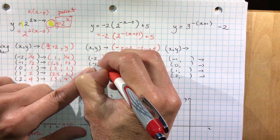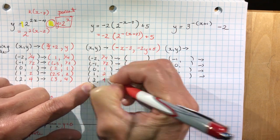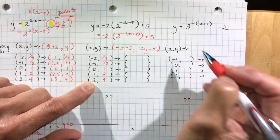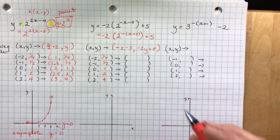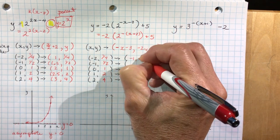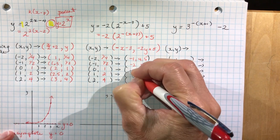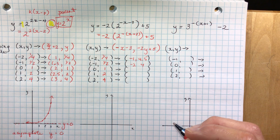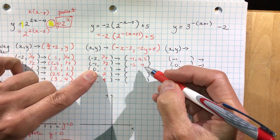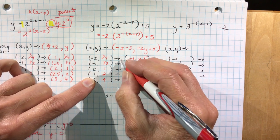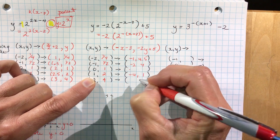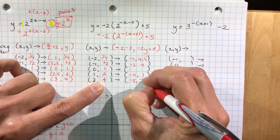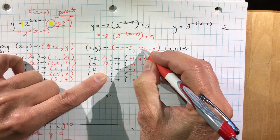I'm going to copy the beginning points from my other example because it's the same parent function y equals 2 to the x. Now I'll apply the transformation and give you the values. Plugging in: minus 2 gives minus 1 and 4 and a half; minus 1 gives minus 2 and 4; 0 gives minus 3 and 3; and 1 gives minus 4 and 1. Then minus 5: minus 4 times negative 1 is minus 4, times minus 2 is minus 8, plus 5 is minus 3. And minus 3 times negative 1 is minus 3, minus 2 times 1 is minus 2, plus 5 is 3.